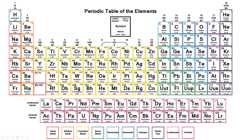Iron, for example, can have a charge of plus 3 or a charge of plus 2. Another example would be copper — copper can have a charge of positive 2 or positive 1. Most of the multivalent metals are found in the middle region of the periodic table, and these metals are known as the transition metals. Many of them can have 2 or more charges.